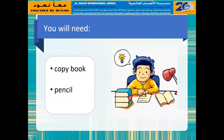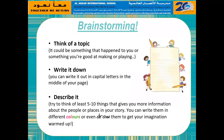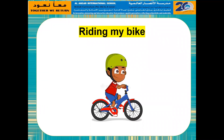You will need your copy book and a pencil before we go ahead. Now let's get brainstorming. I want you to write our topic in the middle of your page. Once you've written it down, you will think of at least five to ten things that can give you more information about the people or the places in your story. You can describe it with different colours or even draw some pictures to get your imagination warmed up.